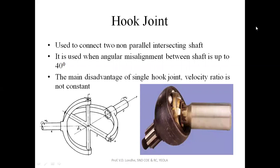There are two types of hook joint: the single joint and the double hook joint. The main disadvantage of the single hook joint is that the velocity ratio is not constant, so for that purpose we use the double hook joint. In the next slide we will see the difference between single and double hook joint.